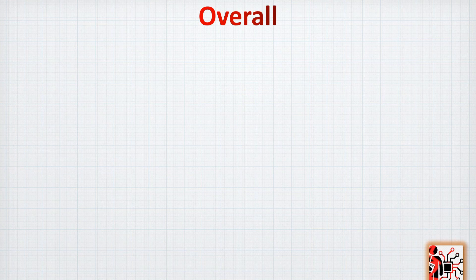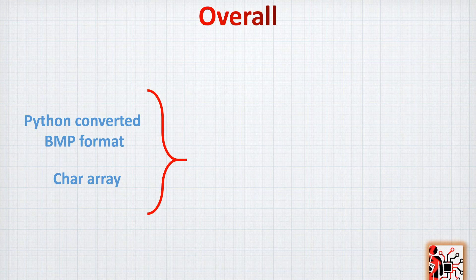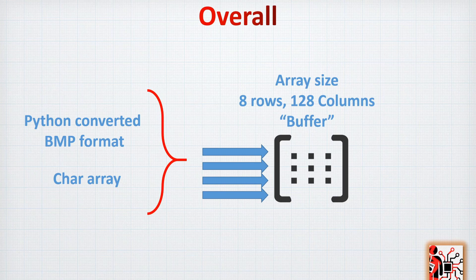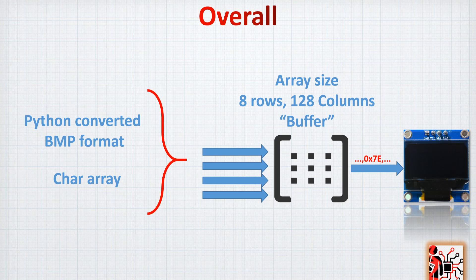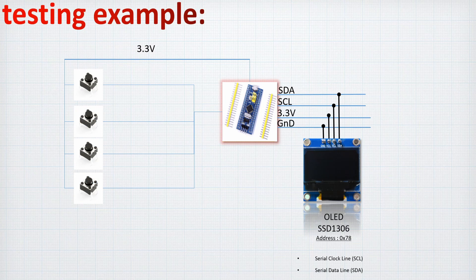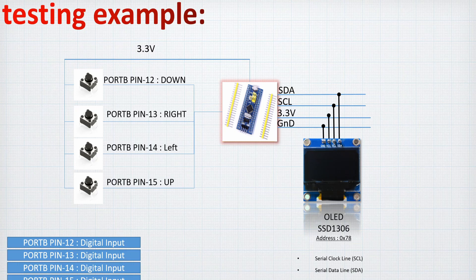Let's have a quick overview on how the code generally works. We will take some pictures and convert them with Python to a certain format, and some char arrays for text that we would like to display. We will put everything in a display that has a size of eight rows and 128 columns, because we are using the OLED with eight rows and 128 columns. We will upload everything in one shot.